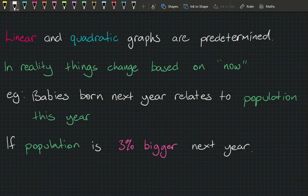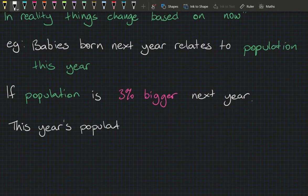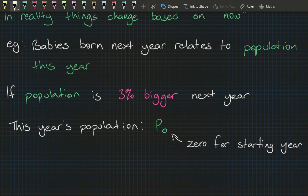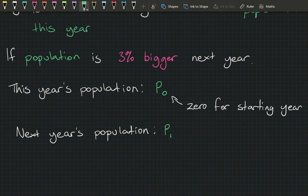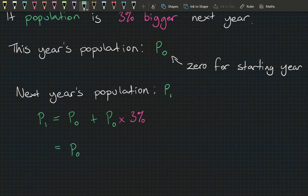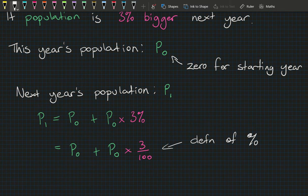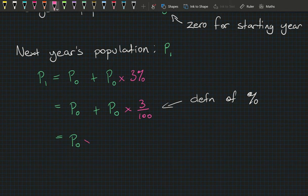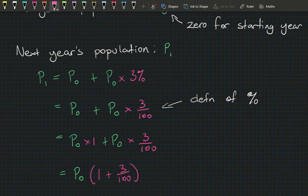If we call this year's population P₀ and next year's P₁, then P₁ equals this year's population plus 3% more of this year's population. That gives us P₀ + P₀ × (3/100), which factors to P₀ × (1 + 3/100). This equals P₀ × 1.03 — the same as 103%, confirming 3% growth.